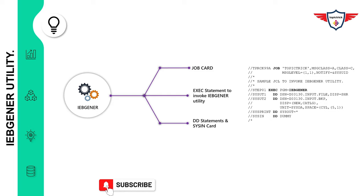Here's a sample JCL that outlines how IBGener utility is used to take a backup. The first two lines are the job card. After that, you have the comment section. Then step 01 is actually executing IBGener utility. You have SYSUT1 and SYSUT2 DD statements, which specify the input and output file. After that you have SYSPRINT followed by SYSIN. In this case, I did not specify any control parameters, so I've used SYSIN DD as dummy.